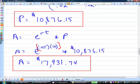Just be careful with your parentheses on this, raising e to that power of that product. You want to be careful with that, but you should get 17931.74. Questions on that?